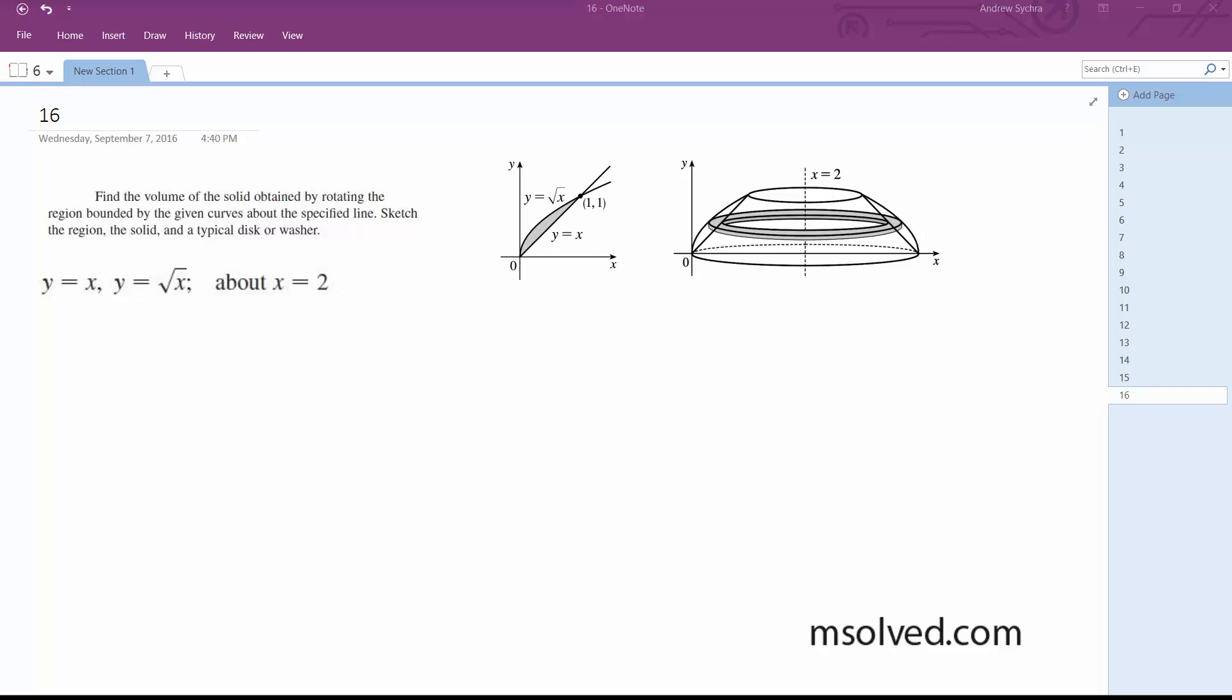So the original area here, before we integrate anything and wrap it around, is going to be pi outer radius, which is going to be 2 minus y squared squared minus pi 2 minus y squared. And the reason why is because we're wrapping this around x equals 2 and flipping this around here like that. So for each instance, that's what's happening. That's why I used 2.